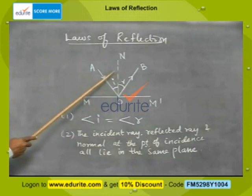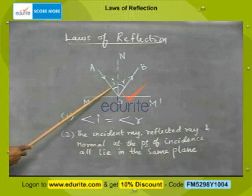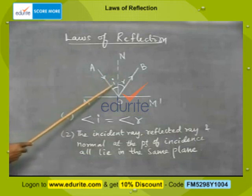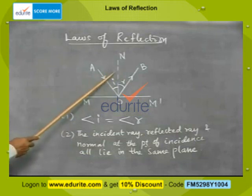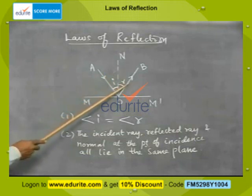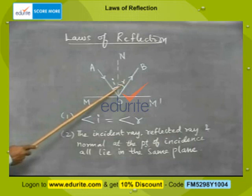The angle measured from the normal to the incident ray is called the angle of incidence. The angle measured from the normal to the reflected ray is the angle of reflection R.